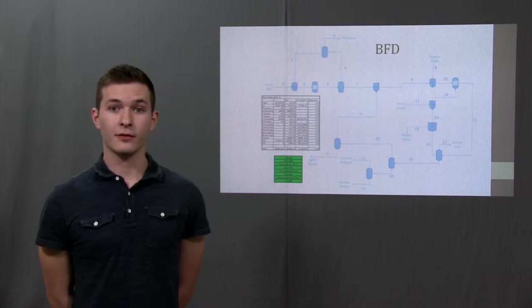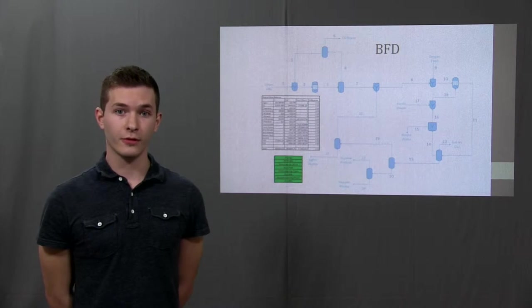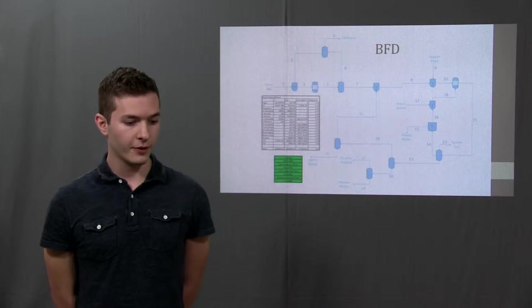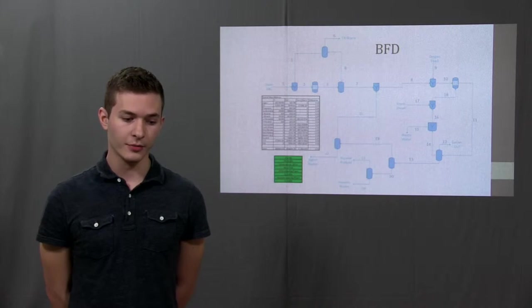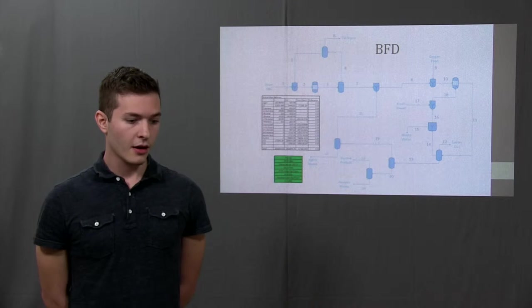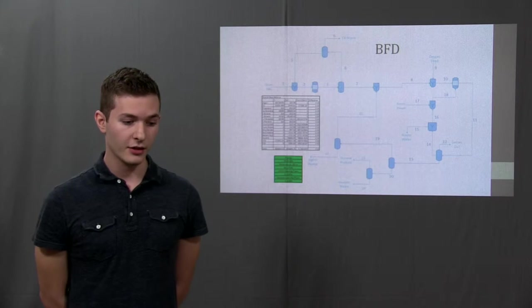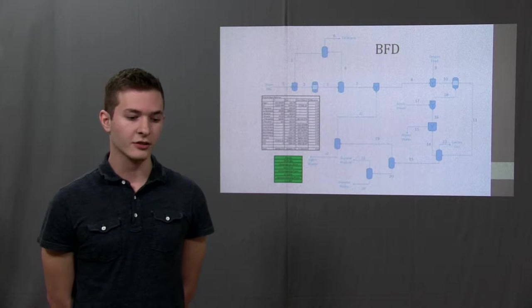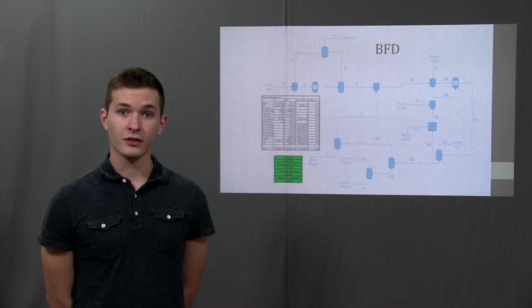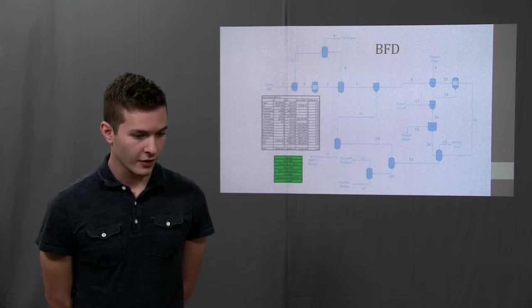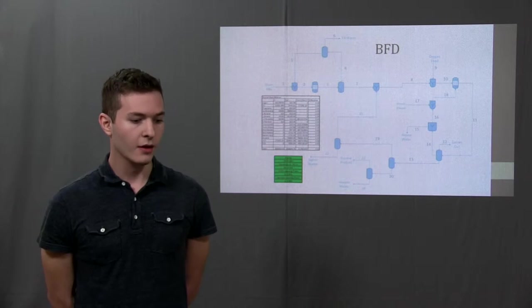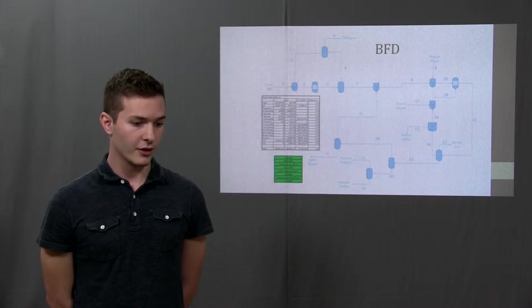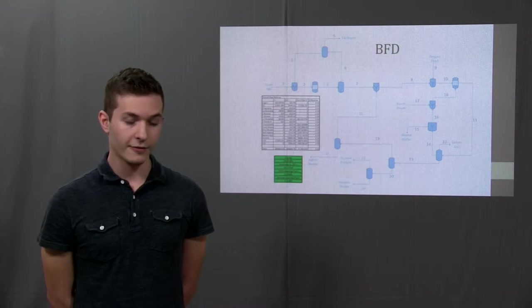Hello, my name is Josh and I'm going to give an overview of the block flow diagram of our process. It begins with the C4 feed mixing with the butadiene recycle stream in a mixing tank. It is then fed to the VCHX reactor which converts the butadiene into VCHX. From there, the VCHX is purified from the C4s in a distillation column in which the C4s go to a recycle stream where butadiene is separated out and recycled and the raffinate is sold as fuel.